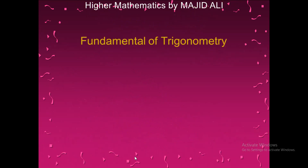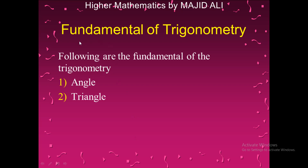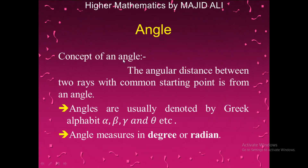There are some fundamentals of trigonometry. Fundamentals are those terms which cannot be defined precisely; they have only conceptual definitions. The first fundamental is angle, the second is triangle. An angle is formed by two rays with a common starting point, and an angle is denoted by Greek letters such as alpha, beta, gamma, theta, etc.